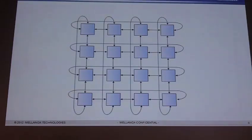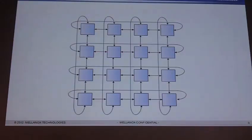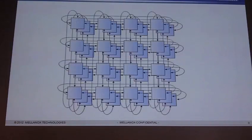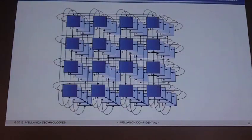They also have a unique feature in that it wraps around. So if I'm here, I don't have to go all the way through — I can just wrap around and go to the minimum hop. To make this 3D, I simply stack these up in the Z direction and connect them all together. So now I have three dimensions to go — X, Y, and Z — to get to any three switch nodes.